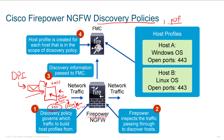So the discovery policy governs which traffic to build host profiles from. The host profile is basically going to be populated with what we learn through inspection. The discovery information that occurs within the Firepower appliance is going to be pushed up to FMC. And then the host profile, which is stored in FMC, says, oh, that IP address — sure, it's Windows, it's this, it's that, it's everything that I could learn about that particular target.